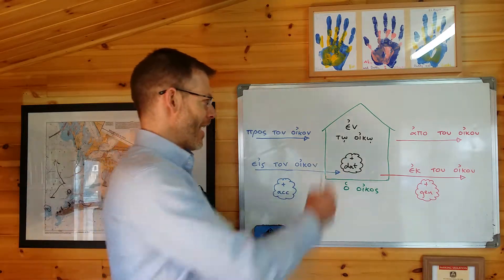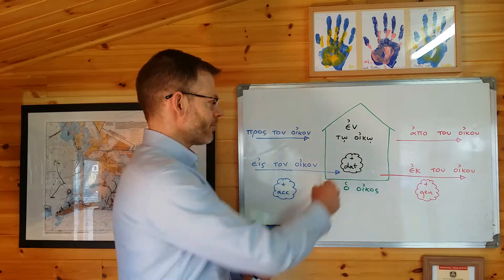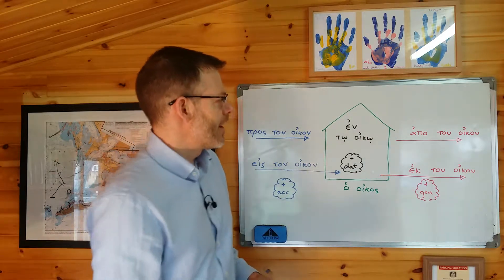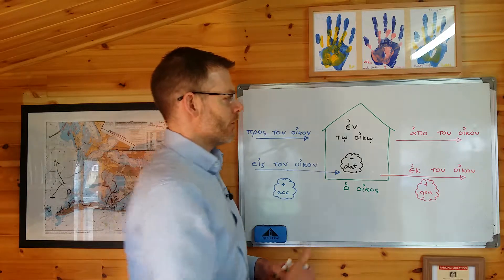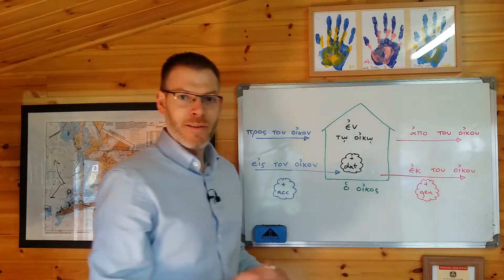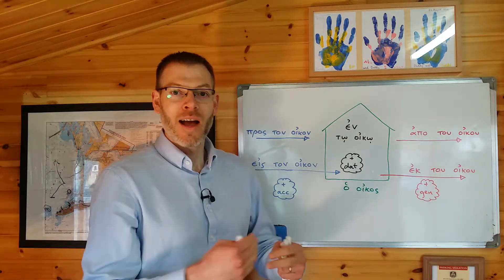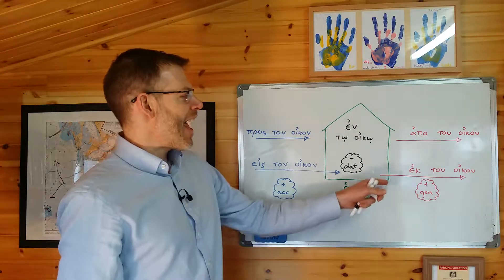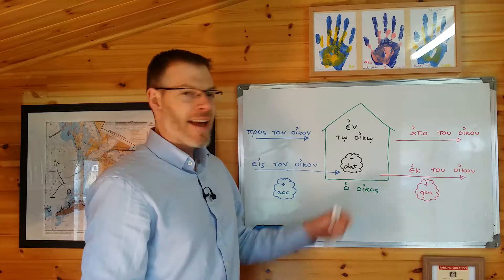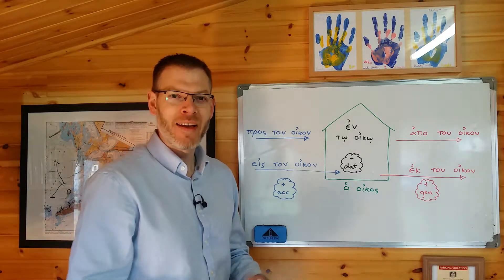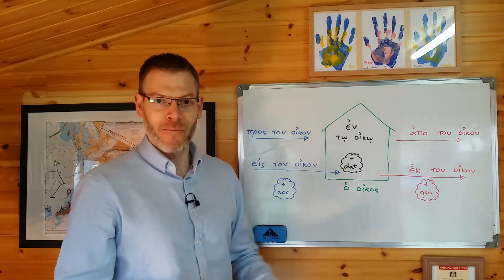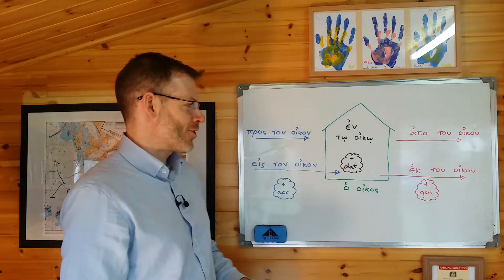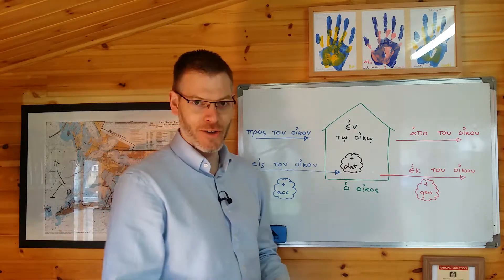En — well, that's the easy one — en simply means 'in': en to oiko. Fourth, apo to oikou: apo means 'from' in the sense of 'away from.' See, the arrow is moving away from the house. And then finally, ek to oikou — ek means 'from' but in the sense of 'out from.' If you were in the house and then you went out of the house, then you went ek to oikou.